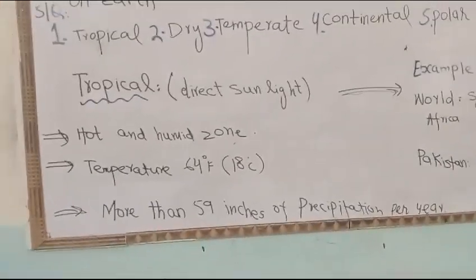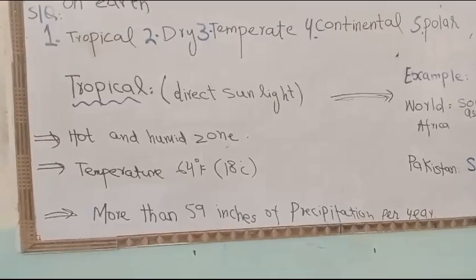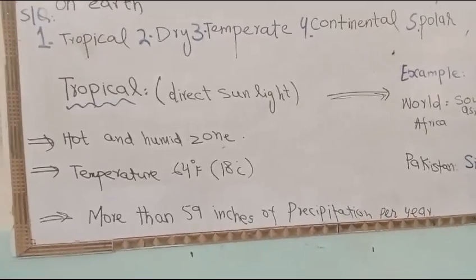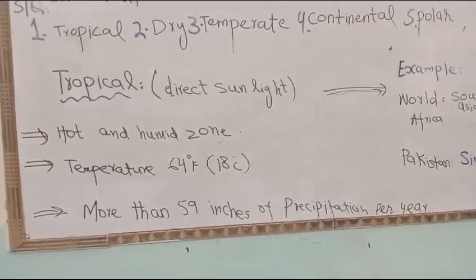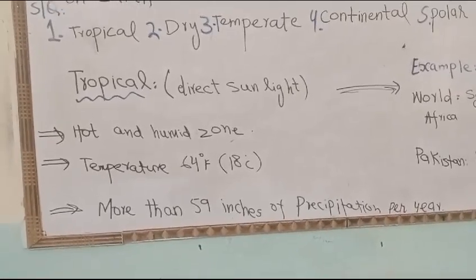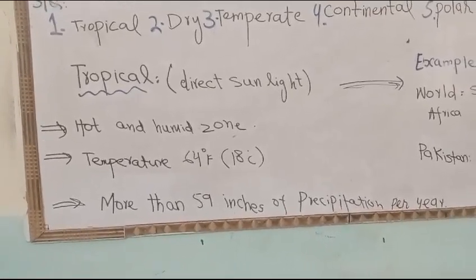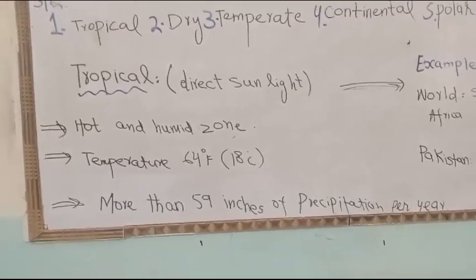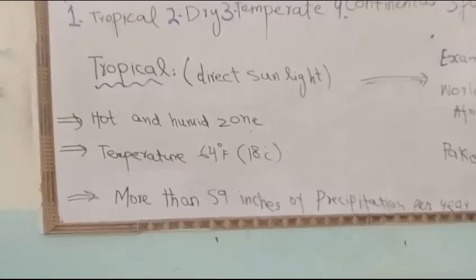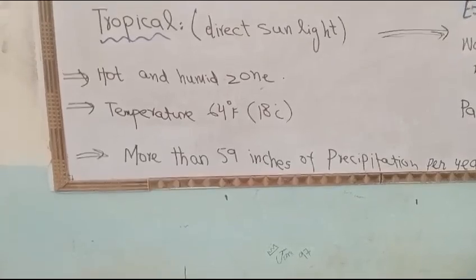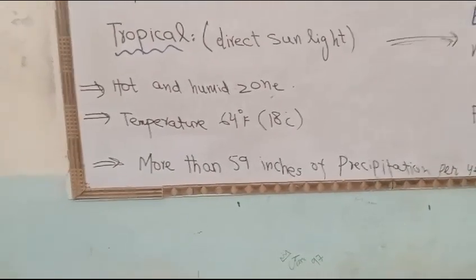Today in Pakistan, first we have learned about the tropical zone. The tropical zone is a zone where sunlight is direct — the sun's rays fall directly. Because sunlight is direct, it is a hot and humid zone. It will be very hot.